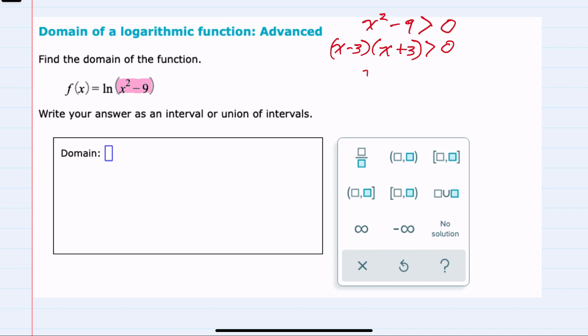This gives us two critical values. When x equals negative 3, we have a critical value, and when x equals positive 3, another critical value.